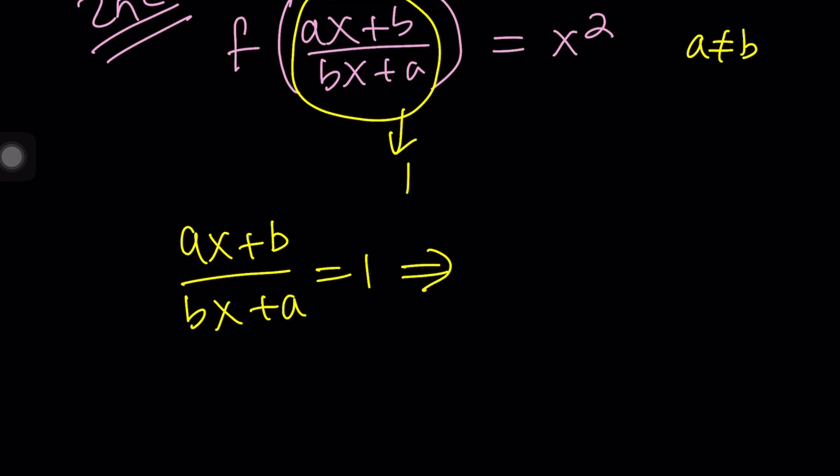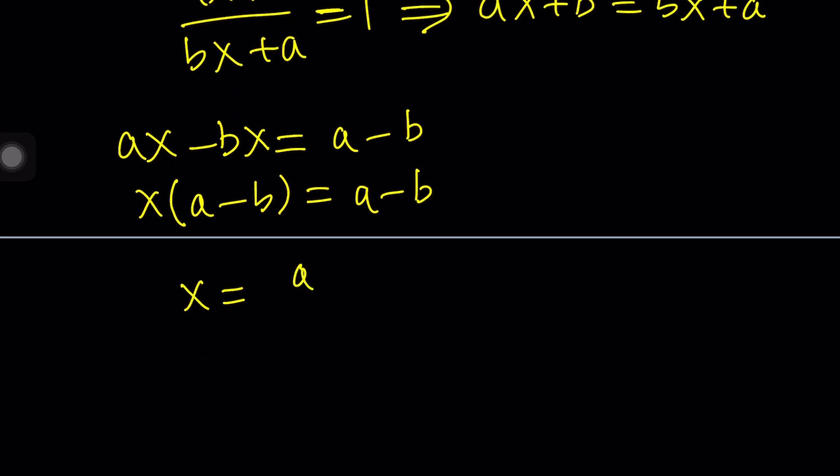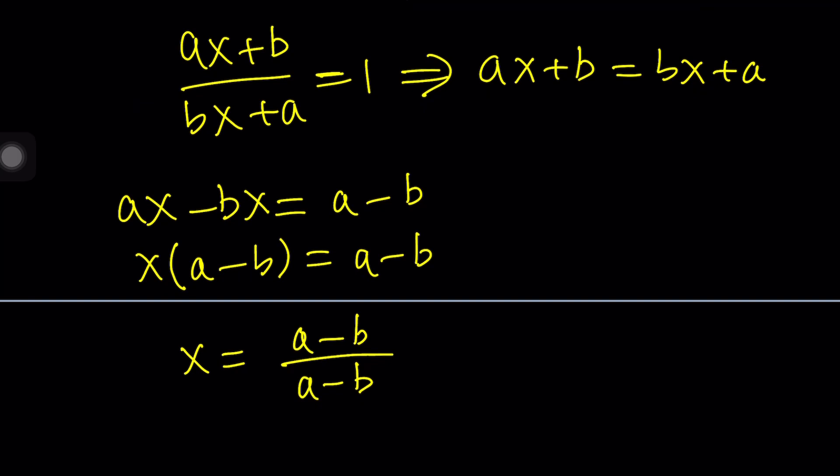And second, you don't want bx+a to be 0, which means x cannot be negative a over b. Under those conditions, we can go ahead and solve it: ax+b equals bx+a. Then putting the x terms on the same side: ax minus bx equals a minus b. Finally, factoring out an x gives us x(a-b) = a-b. At this point, it's important to understand why a and b should be different. If a and b are the same, we can't solve for x. There's going to be no solutions, it's going to be undefined or indeterminate. But if a and b are different, then we get x equals 1 from here.